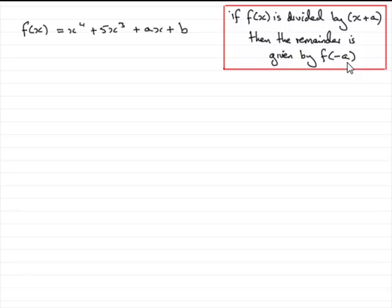So if we're dividing by x minus 2, then the a would be minus 2. We're adding minus 2. So that would mean f of minus minus 2, f of 2, would be the remainder.